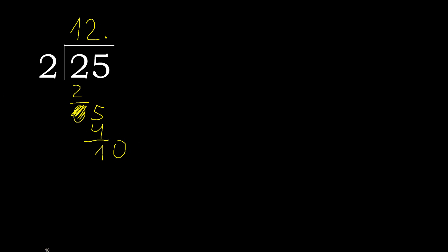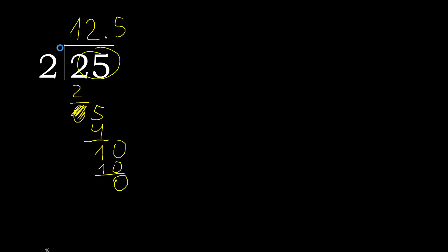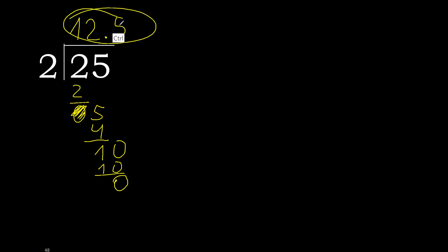Bring down to get 10. 2 multiplied by 5 is 10. 10 minus 10 equals 0. Finish: 25 divided by 2 is 12.5.